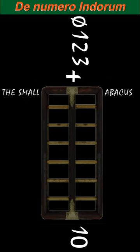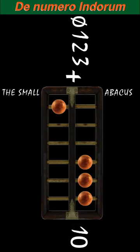But how to use the small abacus of Al-Khwarizmi? Each bead on the upper deck has a value of 10. While each bead on the lower deck has value of 5.